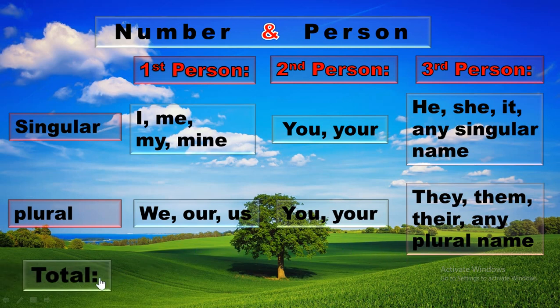Now this is the time for total count. In first person, we get total four singular and three plural, seven words in total. Without these seven words, there is no word for first person. In second person, we got just the same two words: you and your.